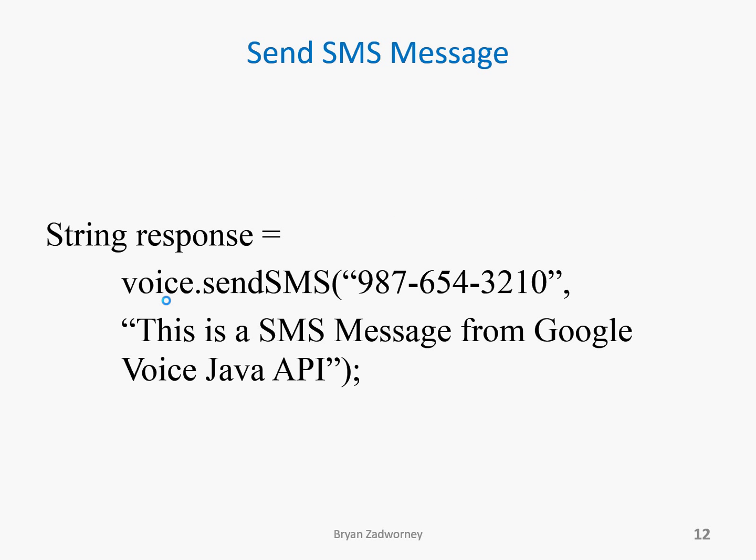If you want to send an SMS message, it's probably the easiest thing you can do with the voice object. The command is simple: voice.sendSMS, and then you pass in two strings. The first string is the number you're going to send to. The second string is the message you're going to send. So the person at 987-654-3210 is going to get an SMS message that says 'This is an SMS message from Google Voice Java API.'